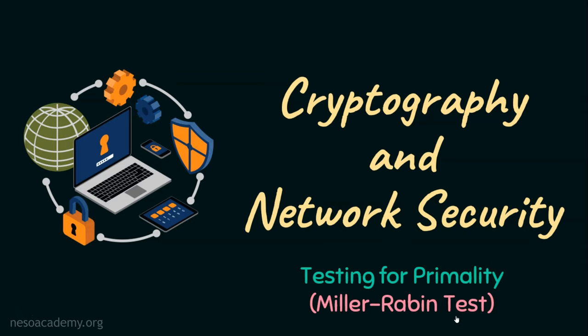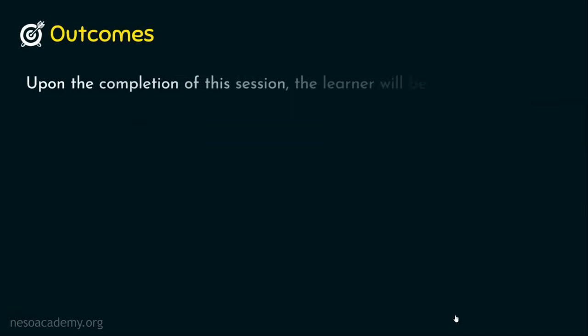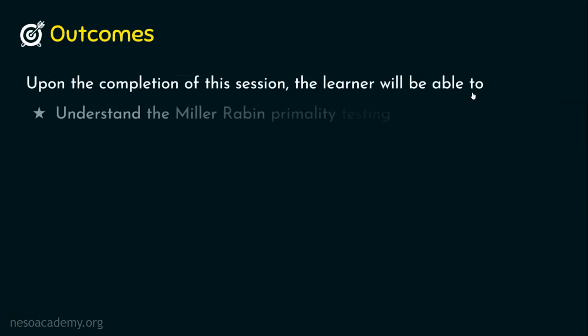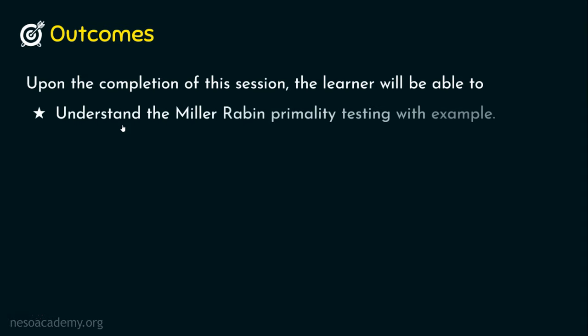As usual, let's start the session with the outcomes. Upon completion of the session, the learner will be able to — Outcome No. 1: understand the Miller-Robin primality test with an example.